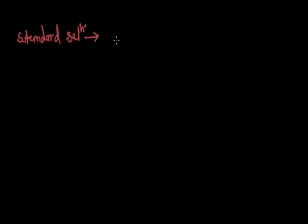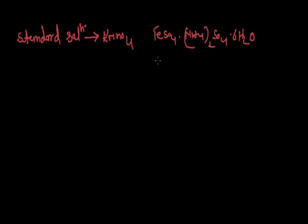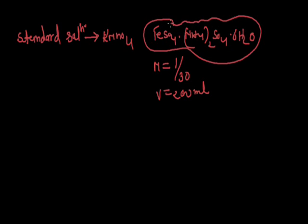Now we will discuss standard solution. The solution of exactly known concentration of the titrant is called the standard solution. For example, if we have two solutions — KMnO4 and ferrous ammonium sulfate (FeSO4·(NH4)2SO4·6H2O) — and the molarity of the ferrous ammonium sulfate is 1/30 with a total volume of 200 ml, then the ferrous ammonium sulfate or Mohr's salt is called the standard solution or titrant.